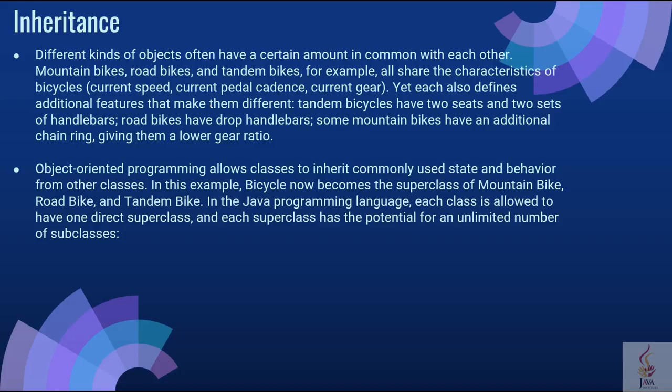Yet each also defines an additional feature that makes them different. Tandem bicycles have two seats and two sets of handlebars. Road bikes have drop handlebars. Some mountain bikes have an additional chain ring, giving them a lower gear ratio. Object oriented programming allows classes to inherit commonly used state and behavior from other classes. In this example, bicycle becomes the superclass of mountain bike, road bike and tandem bike. In the Java programming language, each class is allowed to have one direct superclass, and each superclass has the potential for an unlimited number of subclasses.